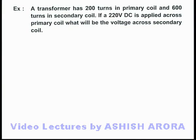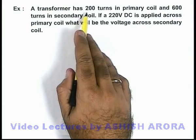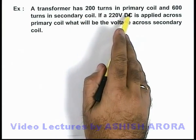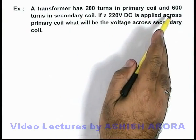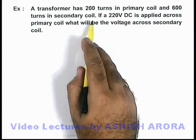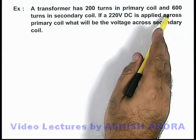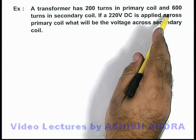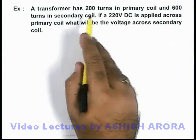In this example, we are given that a transformer has 200 turns in the primary coil and 600 turns in the secondary coil. As you can see, this is a step-up transformer, since the number of turns in the secondary coil is higher.